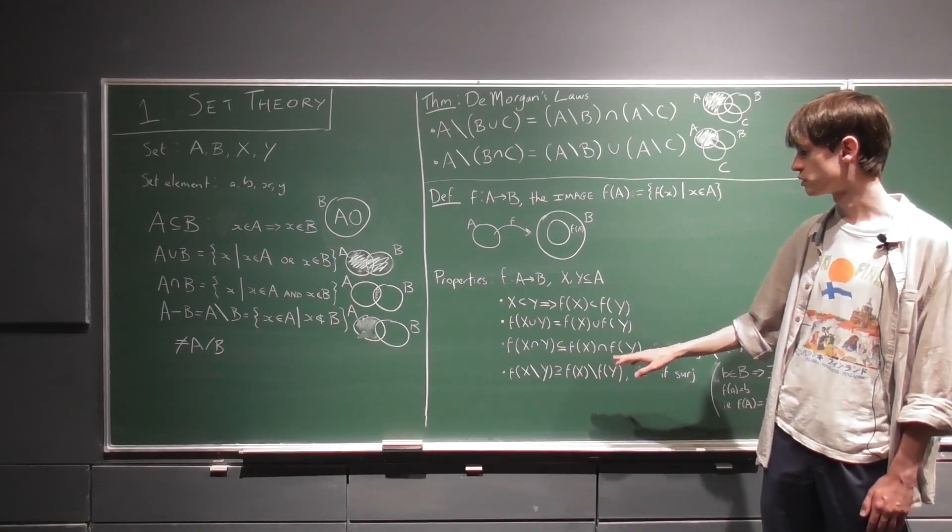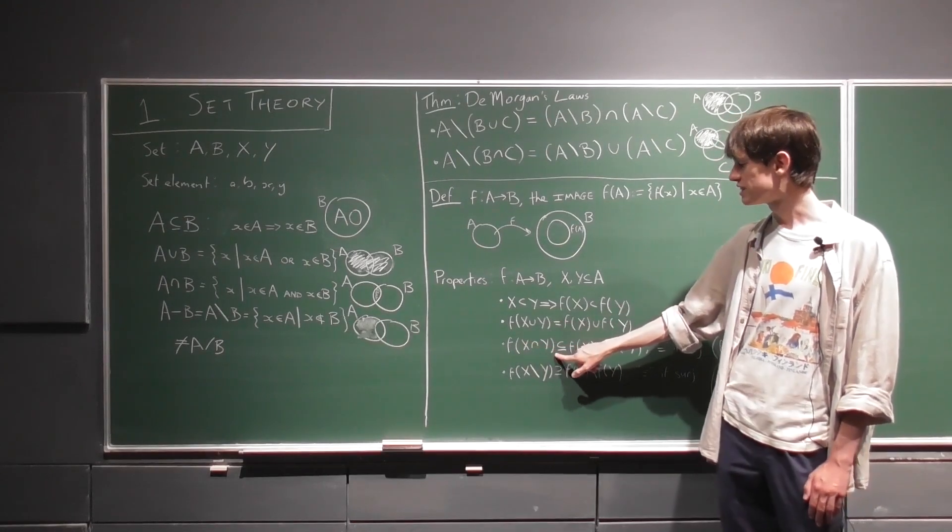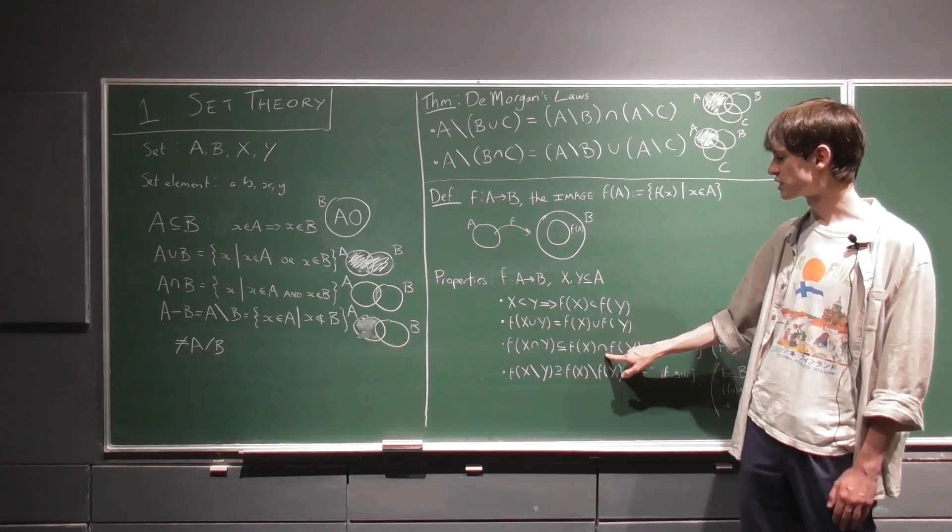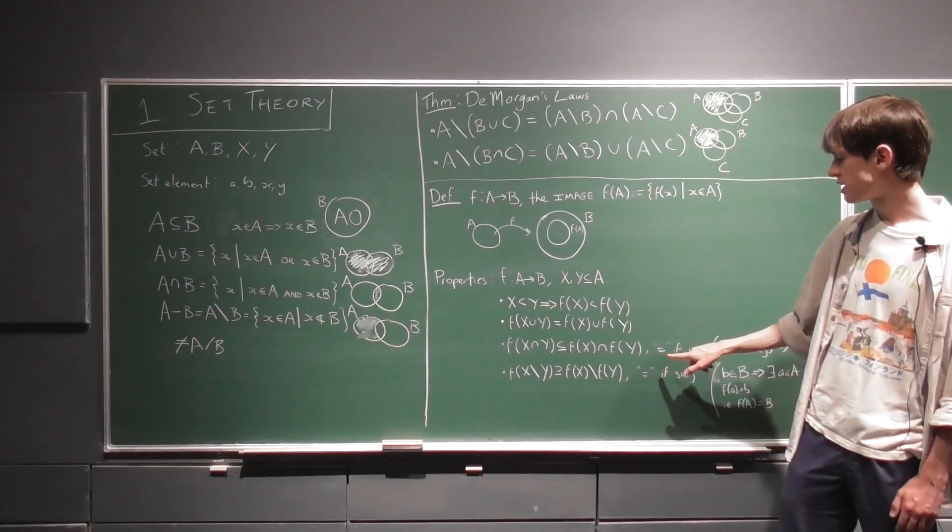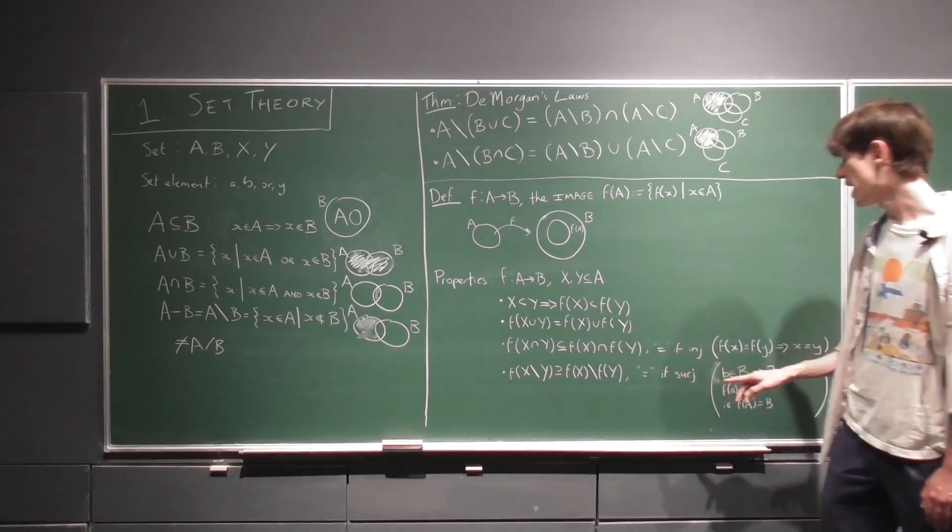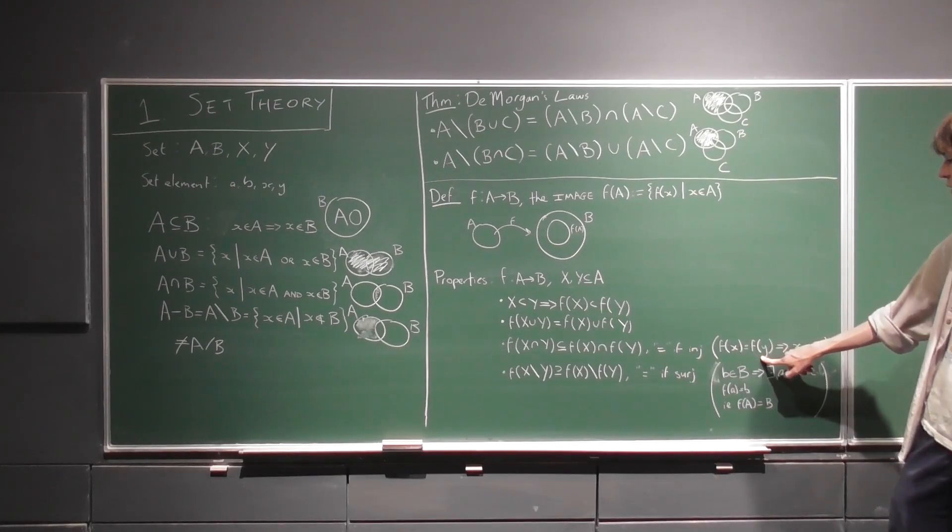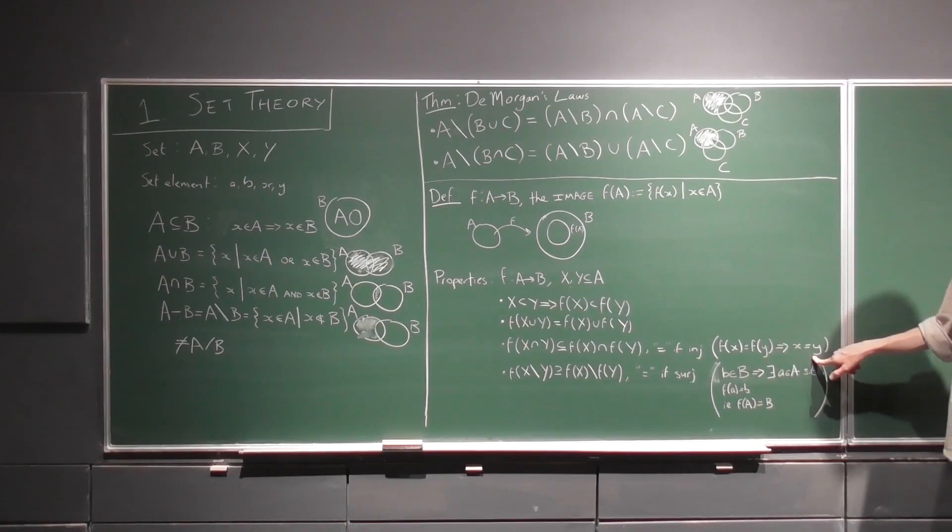This does not hold necessarily true for intersections, so the image of the intersections is a subset of the intersection of the images. Now equality holds if f was an injective function, and just to remind you that injective means that if f of x is equal to f of y, that means that x and y are the same.